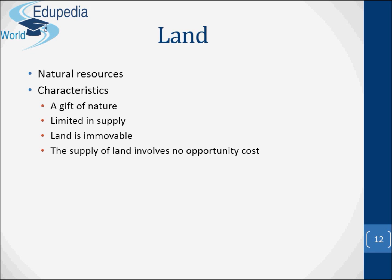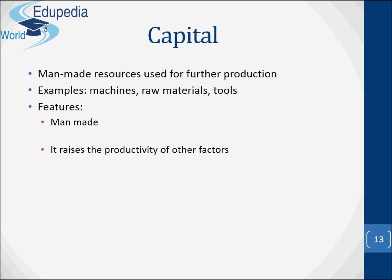Let's focus on land. Land is a natural resource — it is a gift of nature, it is limited in supply, and it is immovable. The supply of land involves no opportunity cost. As for capital, it is a man-made resource used for further production, such as machines and tools. It raises the productivity of other factors.